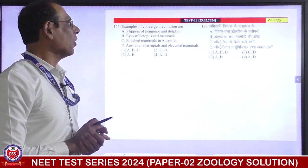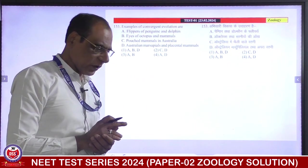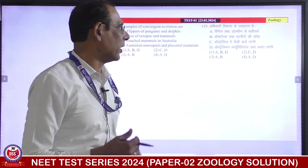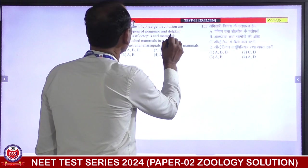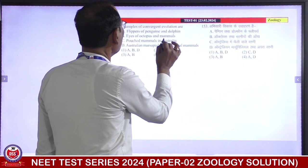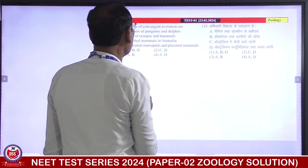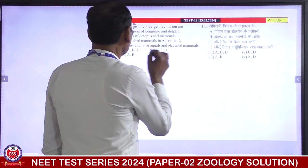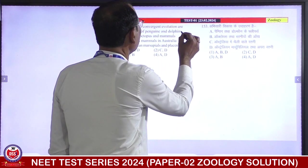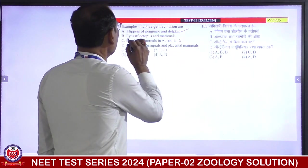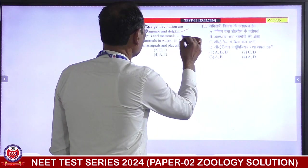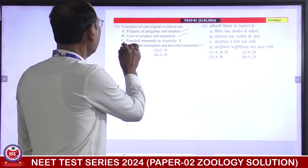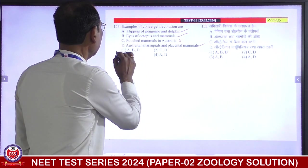Next question: example of convergent evolution. The flippers of penguins and dolphins are analogous. The eyes of octopus and mammals are analogous. The different types of mammals in Australia is an example of divergent evolution, not convergent evolution. Australian marsupials and placental mammals — flippers of penguin and dolphin are analogous, and eyes of octopus and mammals are analogous. Australian marsupials and placental mammals are also an example of convergent evolution. So A, B, and D — first is correct answer.